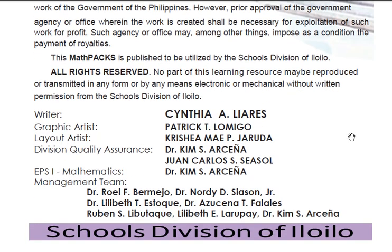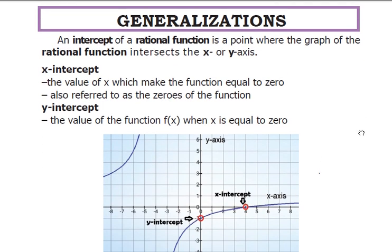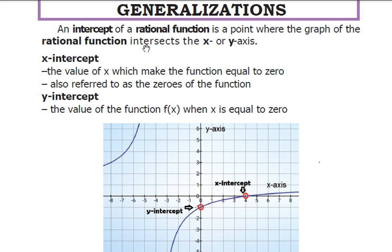Let's start with the generalizations. What is an intercept of a function? An intercept of a rational function is a point where the graph of the rational function intersects either the x-axis or the y-axis. The x-intercept is the value of x which makes the function equal to 0, or the point where the function touches the x-axis.